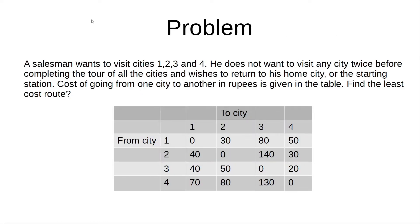How to solve a traveling salesman problem is best demonstrated by solving a problem. A salesman wants to visit cities 1, 2, 3, and 4. He does not want to visit any city twice before completing the tour of all cities, and wishes to return to his home city — the starting city — at the end. The cost of going from one city to another, in rupees, is given in the table. Find the least cost route.